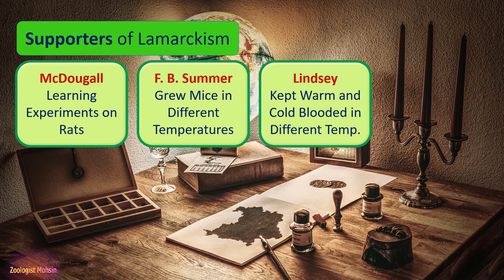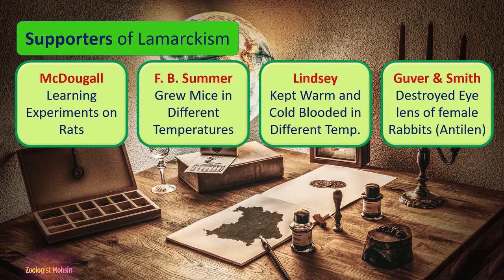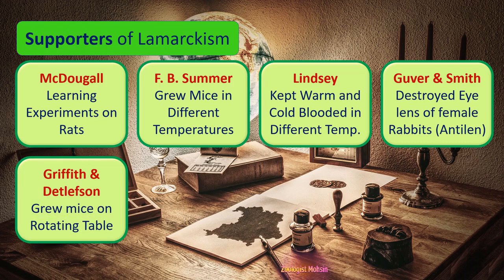The third supporter was Lindsay, who kept warm- and cold-blooded organisms in different temperature conditions and noted certain physiological changes in them generation after generation, also supporting Lamarckism. The fourth supporters were Gouverne and Smith. These two persons destroyed the irises of female rabbits when they were born and noted that after the lens destruction, anti-lens serum was produced in the blood of the parents as well as in the offspring. They concluded this was a heritable bodily change.